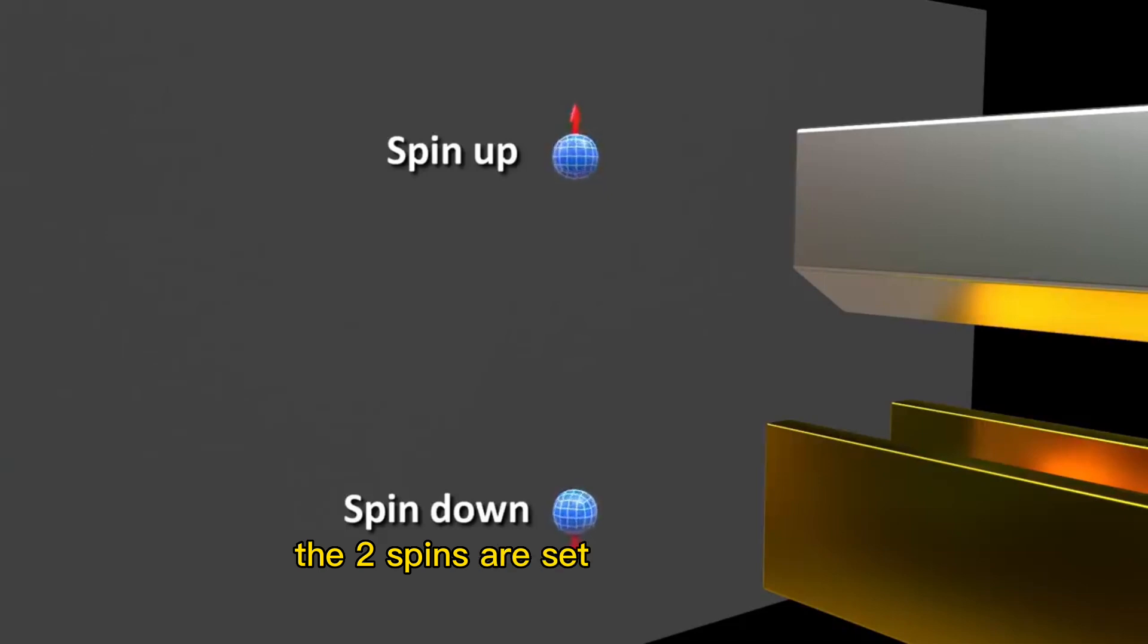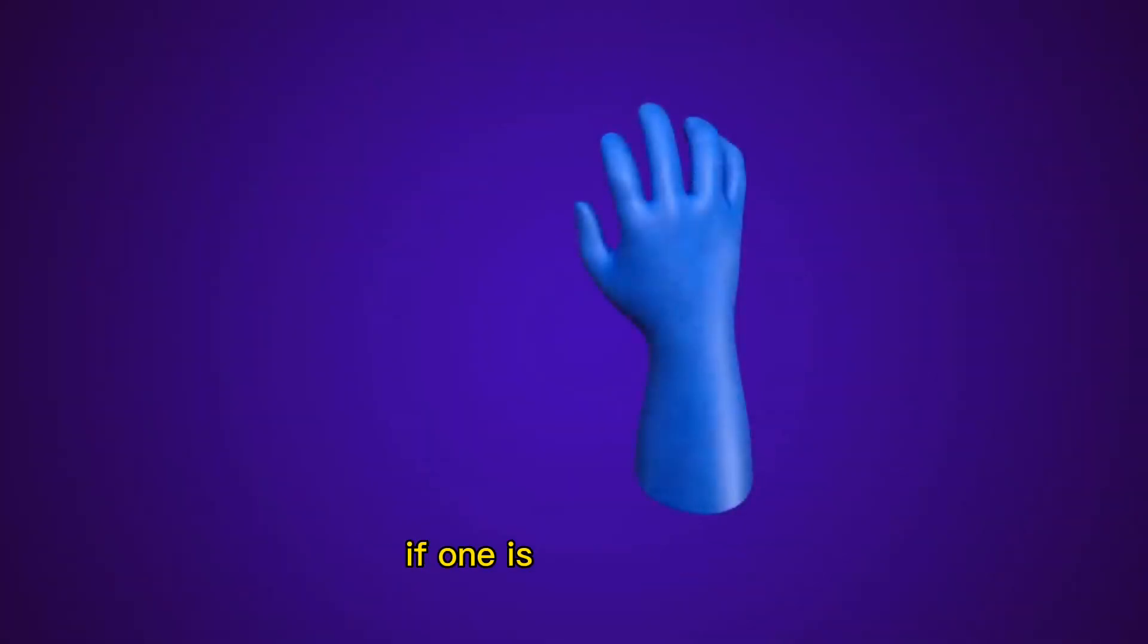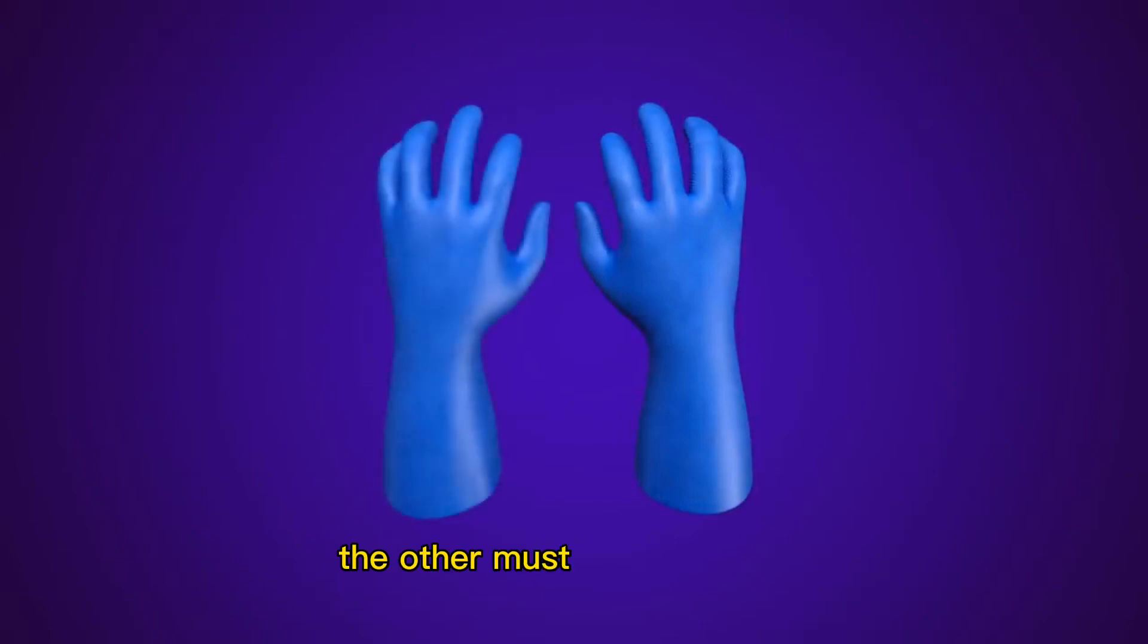The two spins are said to be correlated. They are like a pair of gloves. If one is right handed, the other must be left handed.